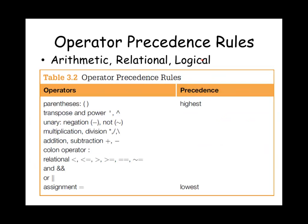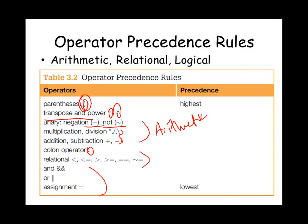Now that we have more operators in our bag, we need to know where they stand in terms of precedence. This table lists the precedence rules for operators. We start with parentheses — you always perform the expression inside the parentheses first. Followed by the transpose and power symbols, then unary negation and NOT, then multiplication and division, addition and subtraction, the colon operator, relational operators, and finally logical operators. So arithmetic operators come before relational operators, which come before logical operators.